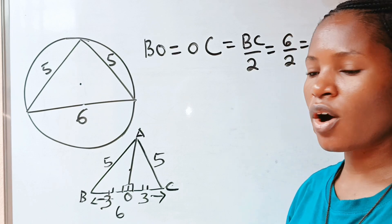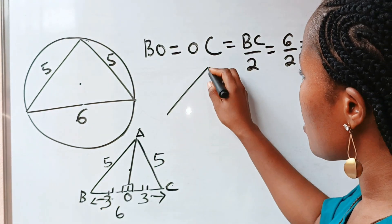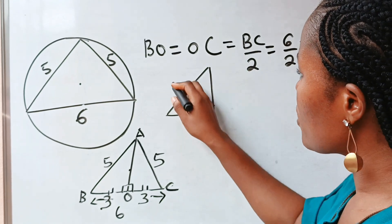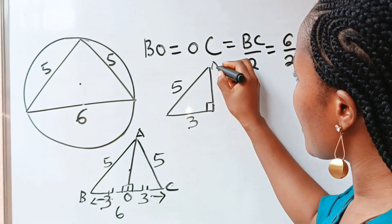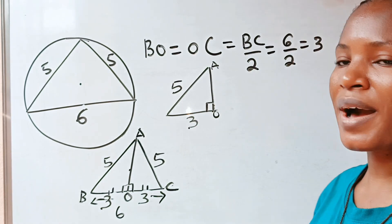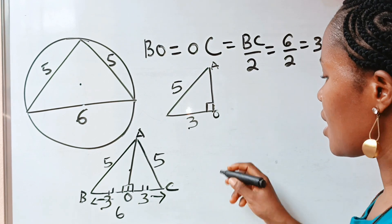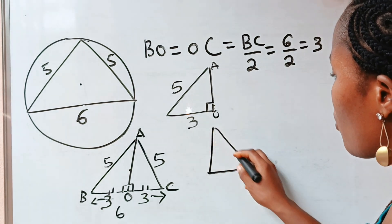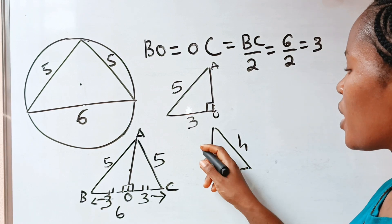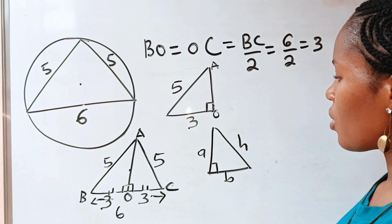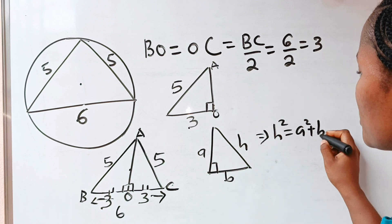Now let's draw out part of this triangle. We have a right-angled triangle with hypotenuse five, a right angle, and the base is three. We can find AO using the Pythagorean theorem, which states that in a right-angled triangle the side facing the right angle is the hypotenuse h, and h squared equals a squared plus b squared.